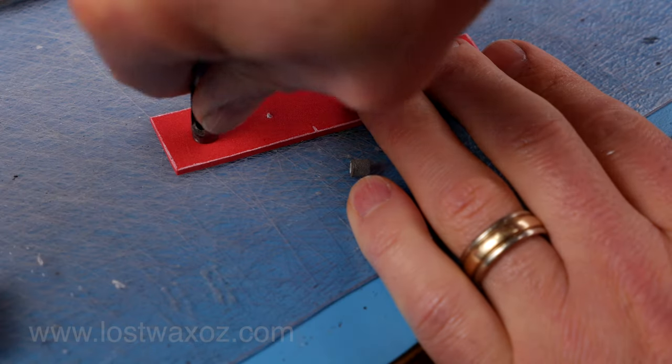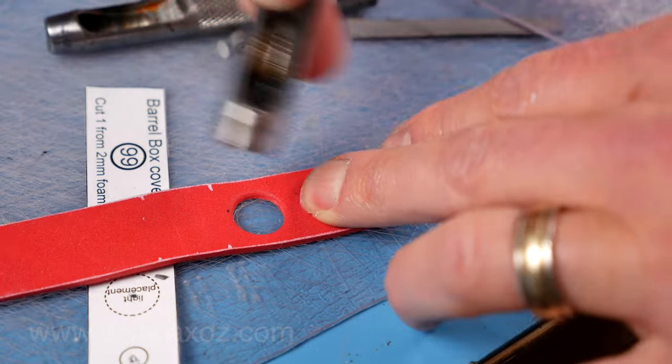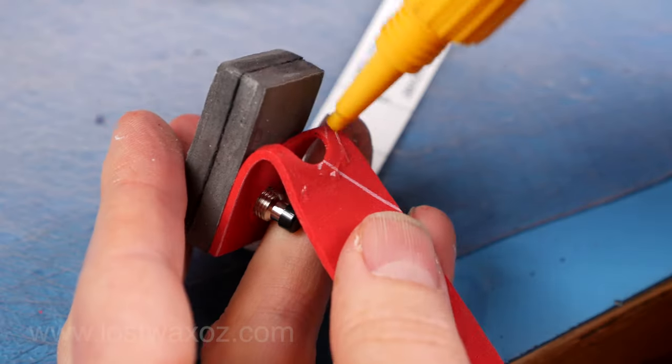Punch a hole for your push switch in the barrel box cover and punch a hole corresponding to whatever size of light you have as well. Slide the cover over the push switch and glue the top surface down.